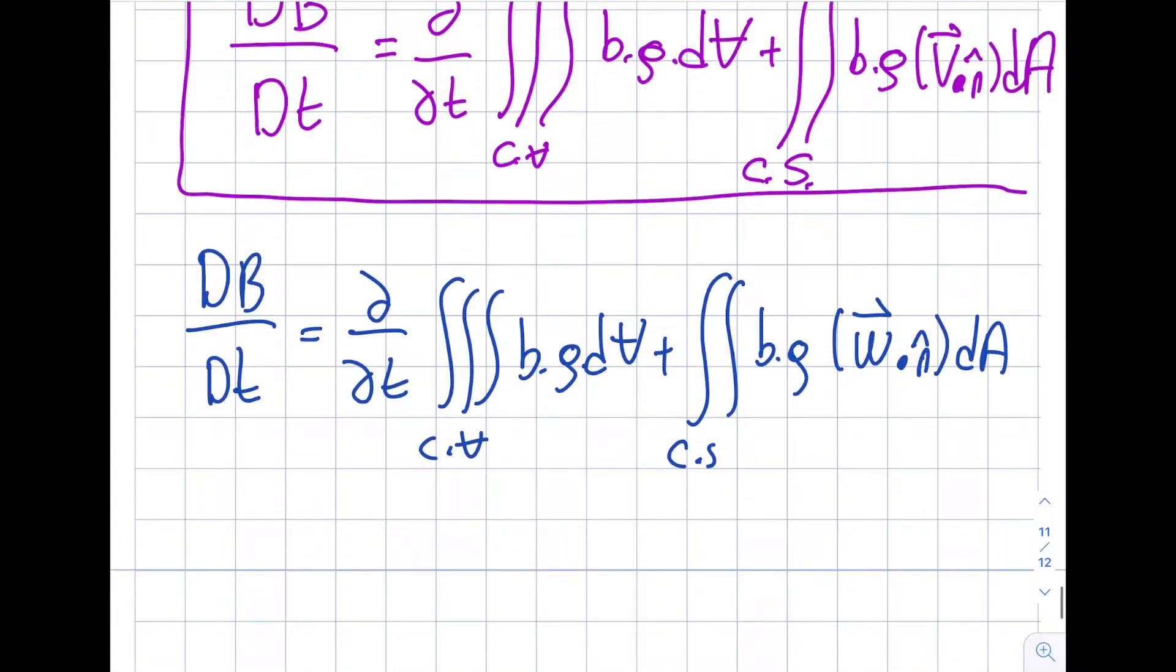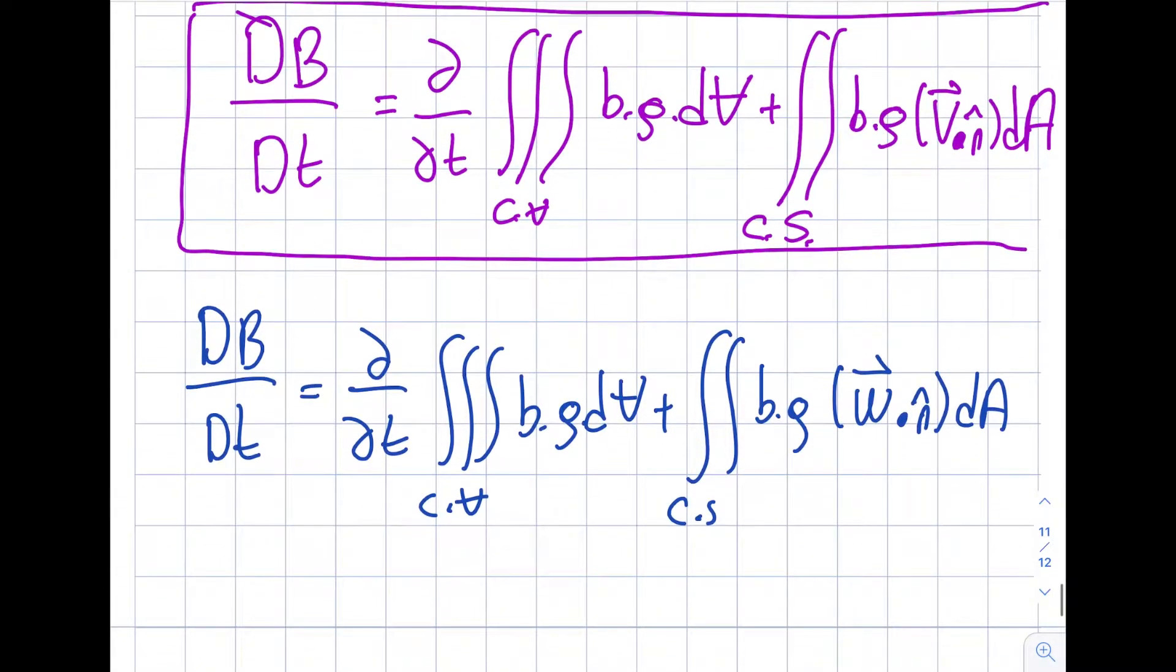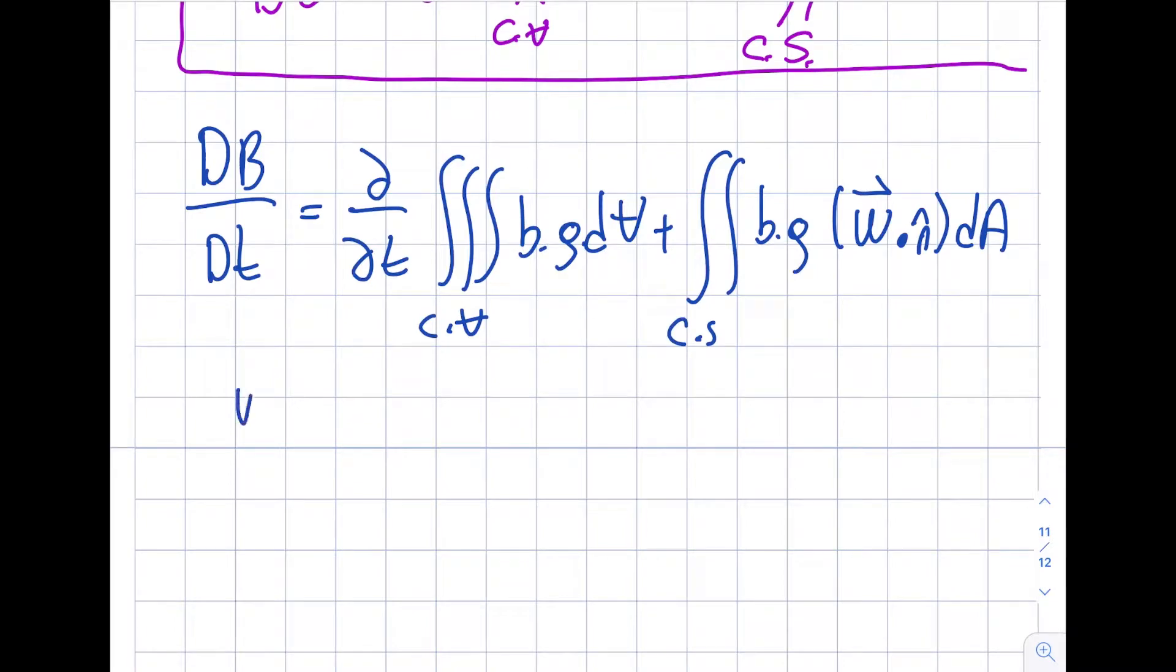I'll talk about each of these terms momentarily, but first let's look at the differences between these two. You see this is a velocity, this is a w, and I want to highlight that this w is equal to velocity for stationary control volumes.